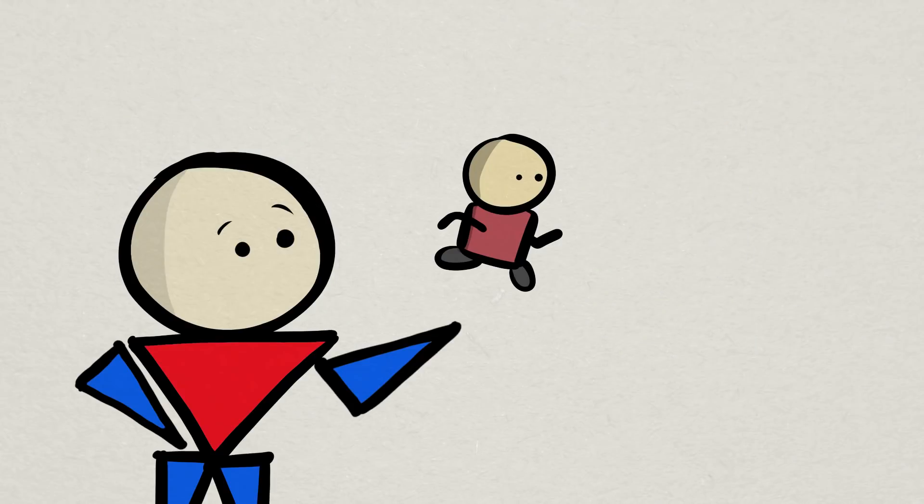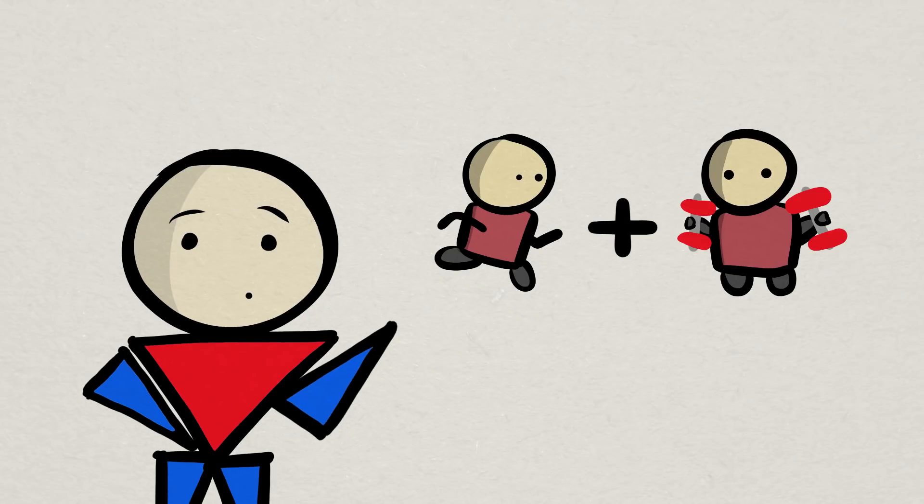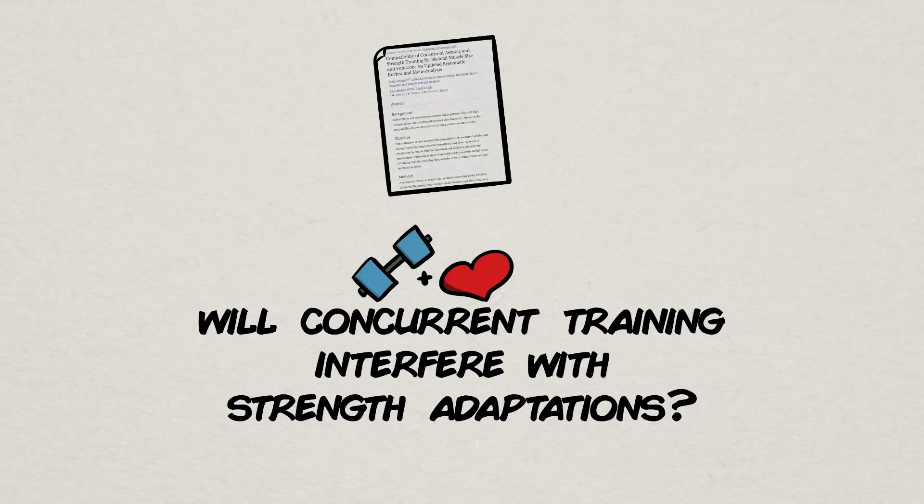With the hypothesis of combining cardio alongside strength training potentially suppressing or interfering with strength adaptations, the ultimate goal of this review was to measure just that. Will the combination of aerobic and strength training, aka concurrent training, lead to different outcomes compared to strength training alone?